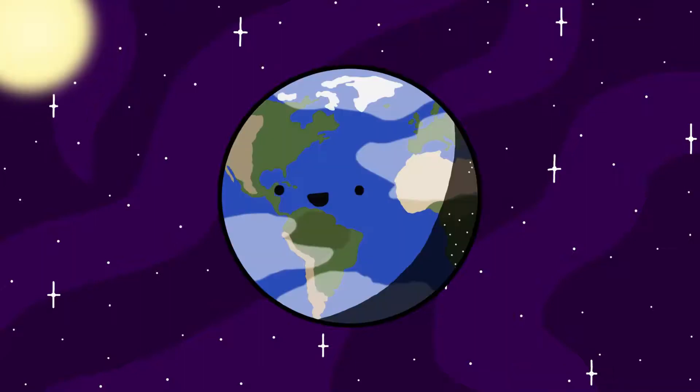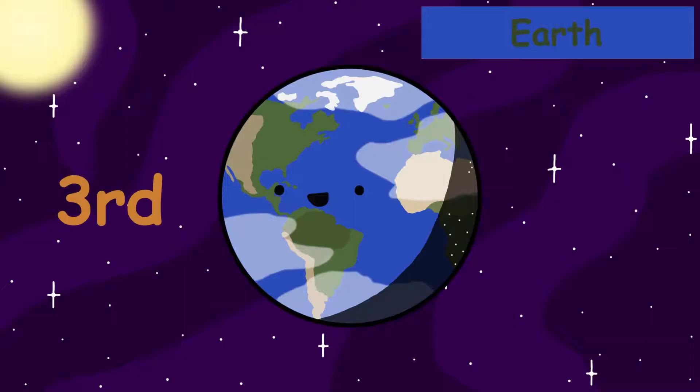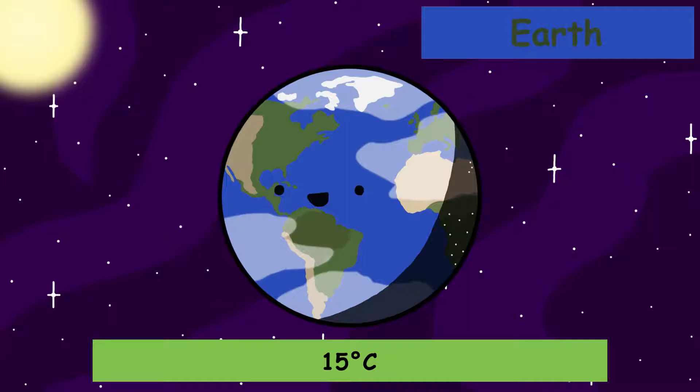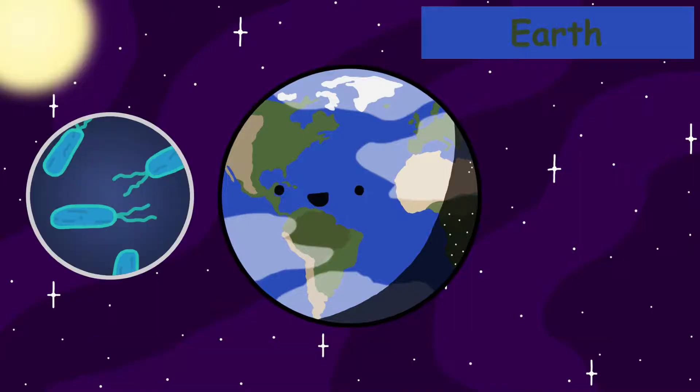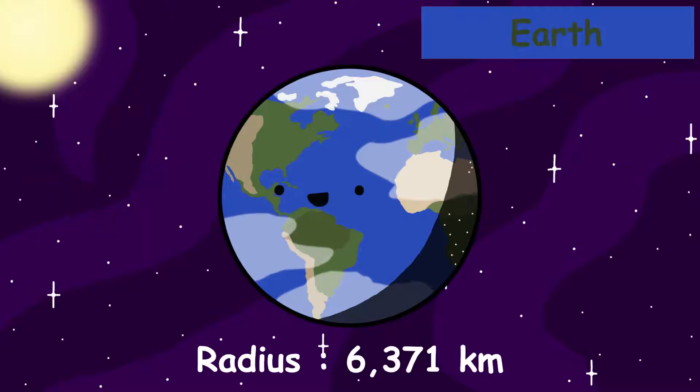After Venus, we arrive at the third planet from the sun, Earth. Earth is our home. At an average surface temperature of 15 degrees Celsius, it is the only planet that can support life, at least we think. Earth has a radius of 6,371 kilometers.